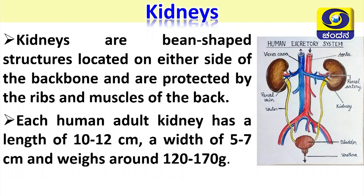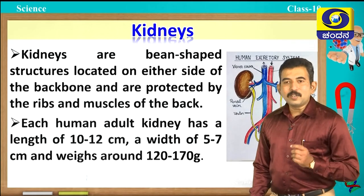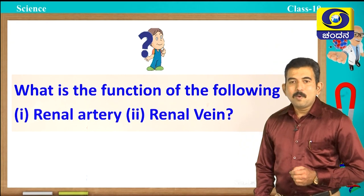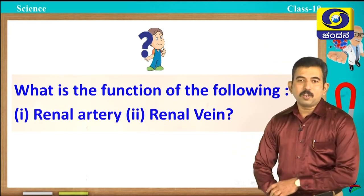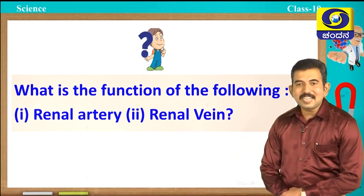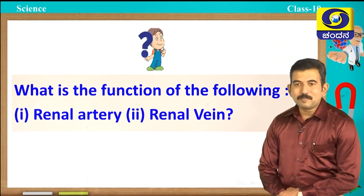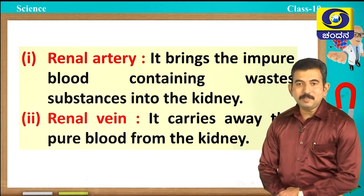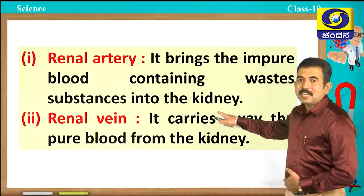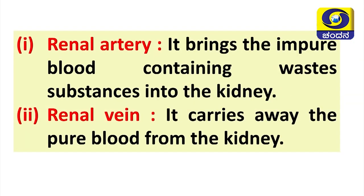You can also see two types of blood vessels: renal vein and renal artery. The renal artery brings impure blood containing waste substances into the kidney, whereas the renal vein carries away the pure blood from the kidney.